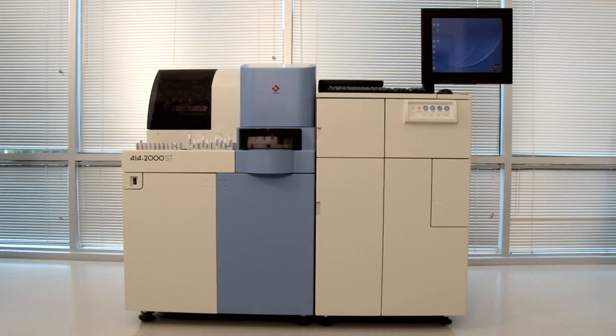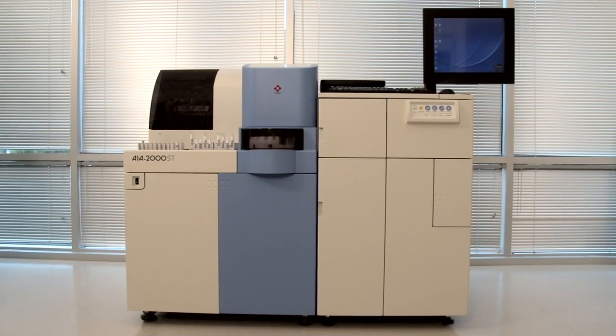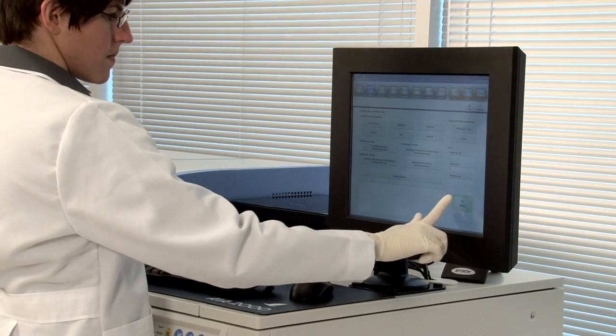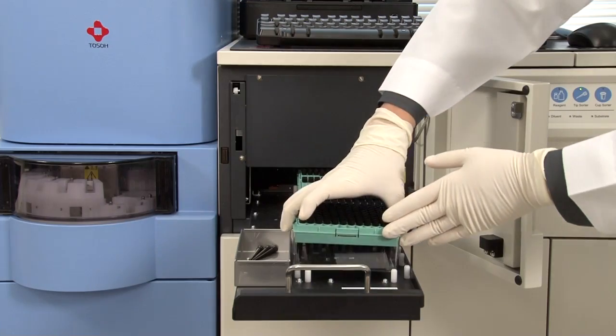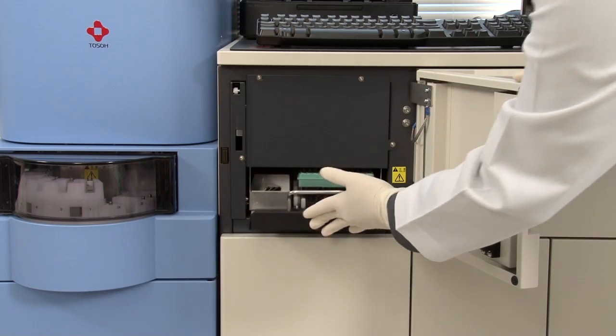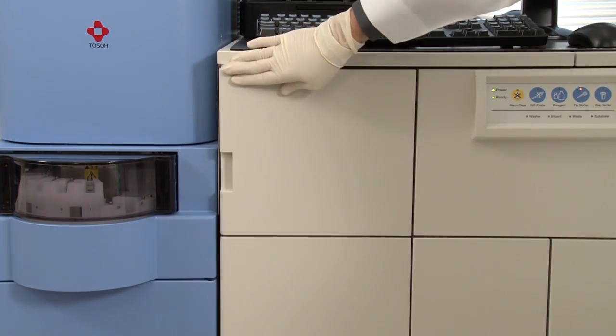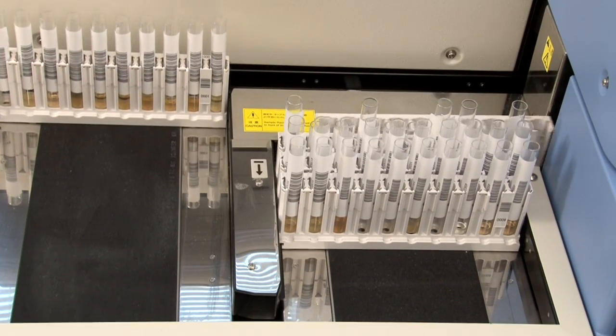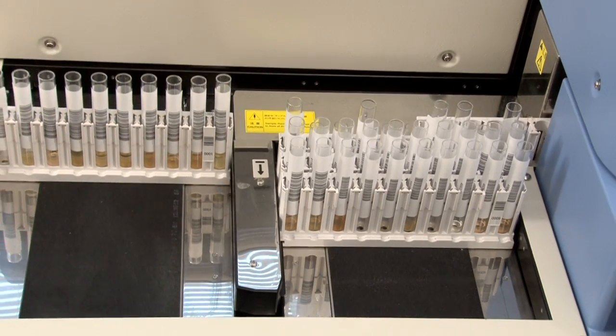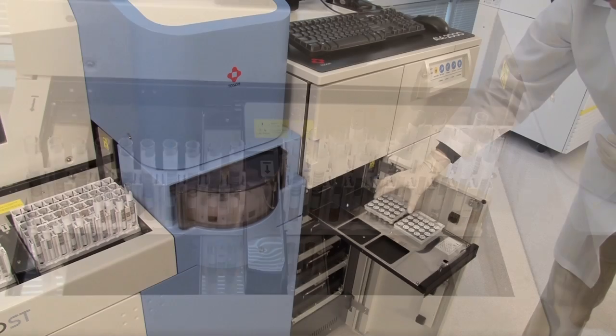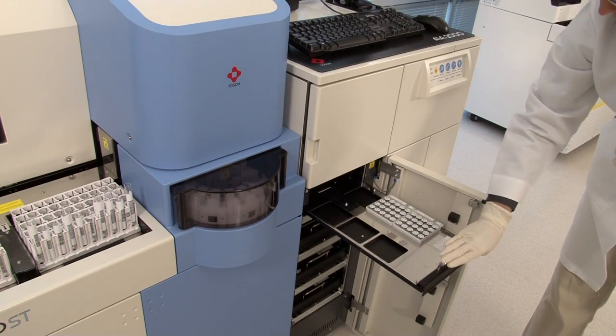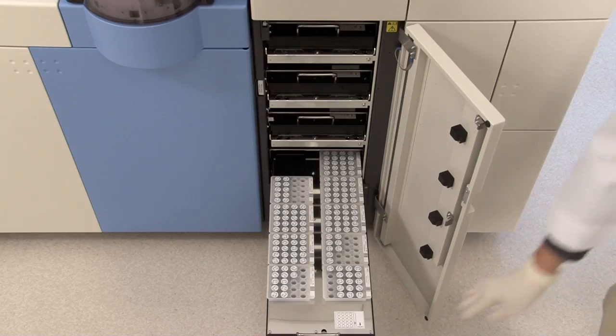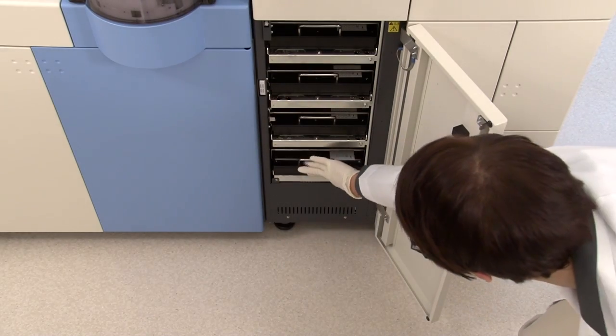It is Toso's goal to improve immunoassay testing while adding functionality to improve workflow and labor time. The AIA-2000 uses Toso's unique test cup immunoassay format and has increased throughput to 200 tests per hour. The user can load up to 960 test cups in a new easy-to-load sorter. This increases walk-away time to approximately four hours.